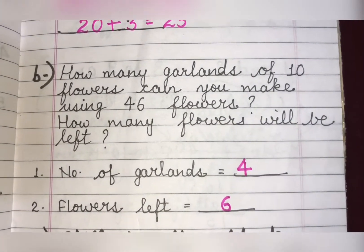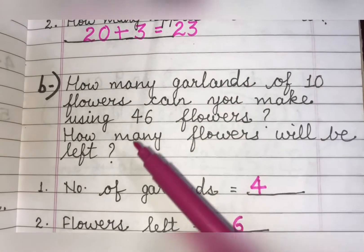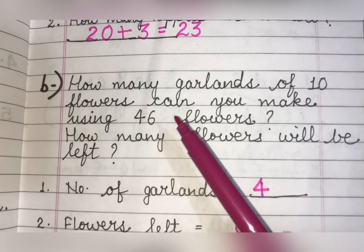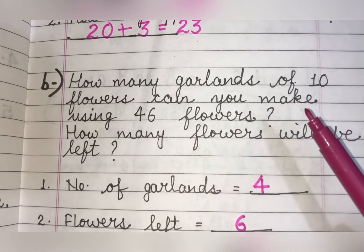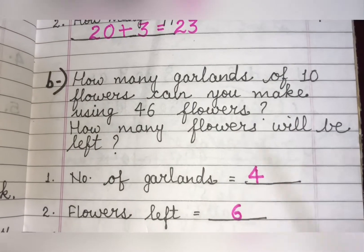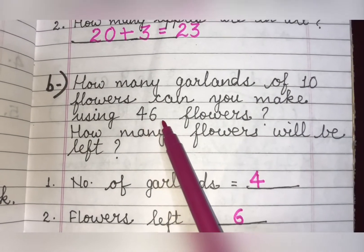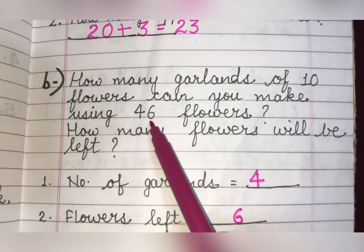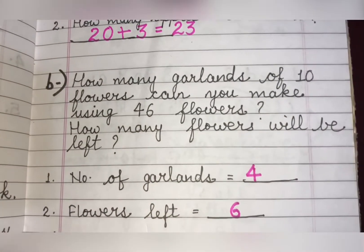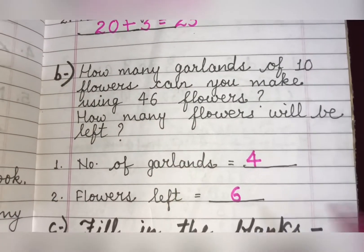Let me explain again. The question is: if you have 46 flowers and you are asked to make garlands of 10 flowers each, how many garlands can you make and how many flowers will be left over? 46 has 4 tens and 6 ones. So 4 garlands can easily be made, and 6 flowers will be left over.